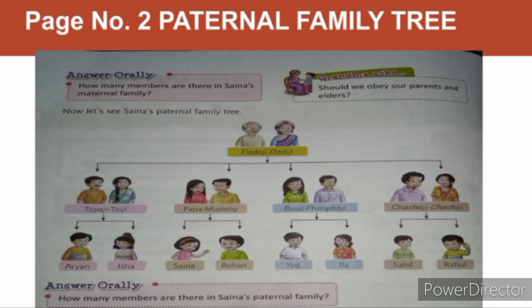So all these children — Aryan, Isha, Sina, Rohan, Yug, Ila, Sahil, and Rahul — are cousins. In a joint family, all these people live together.